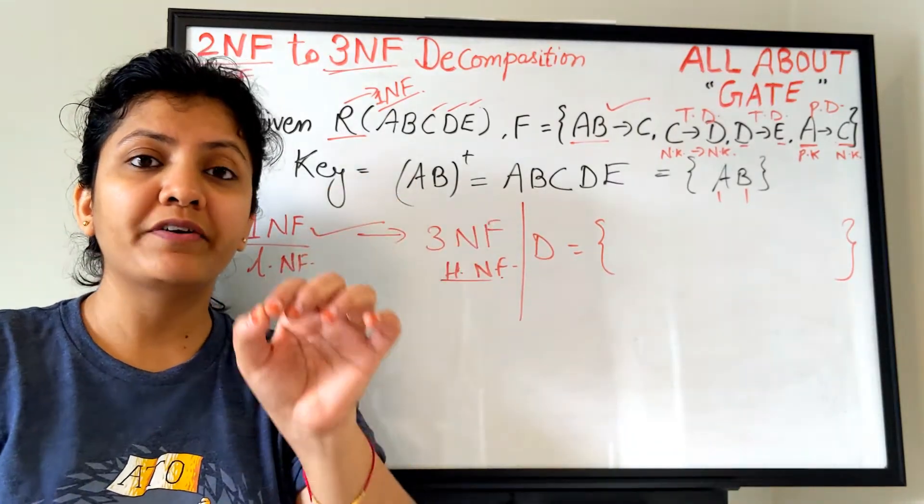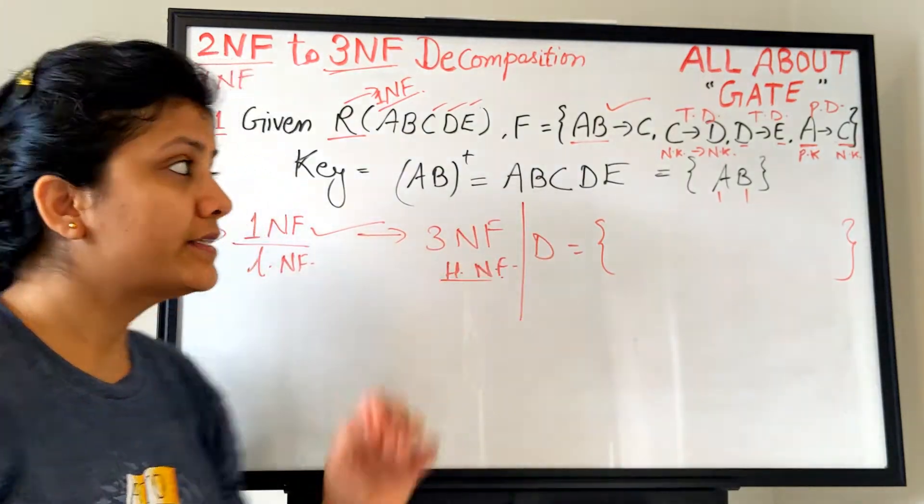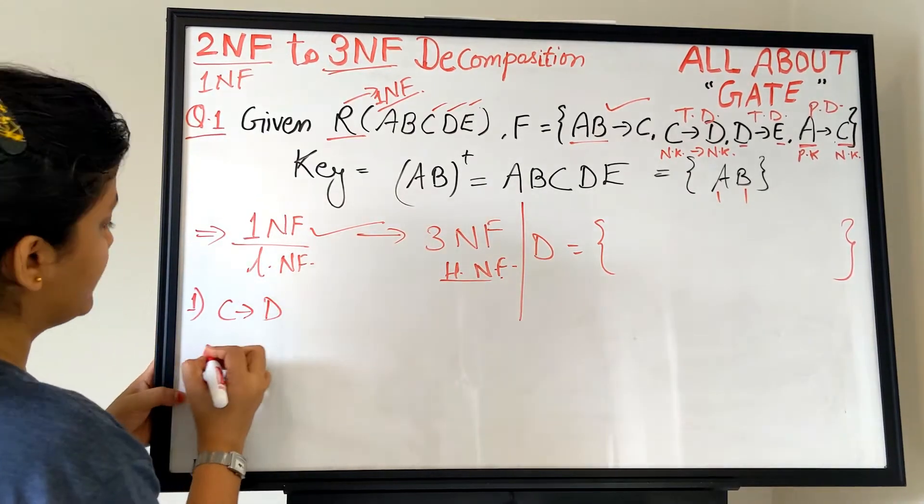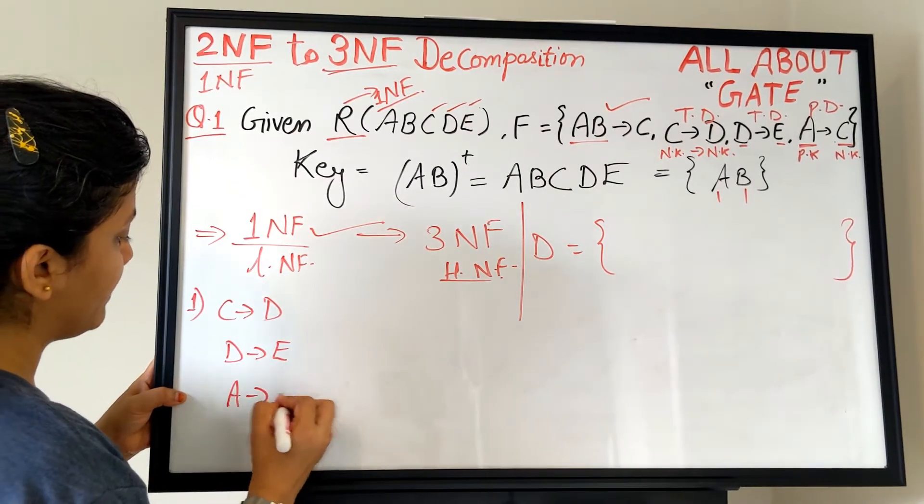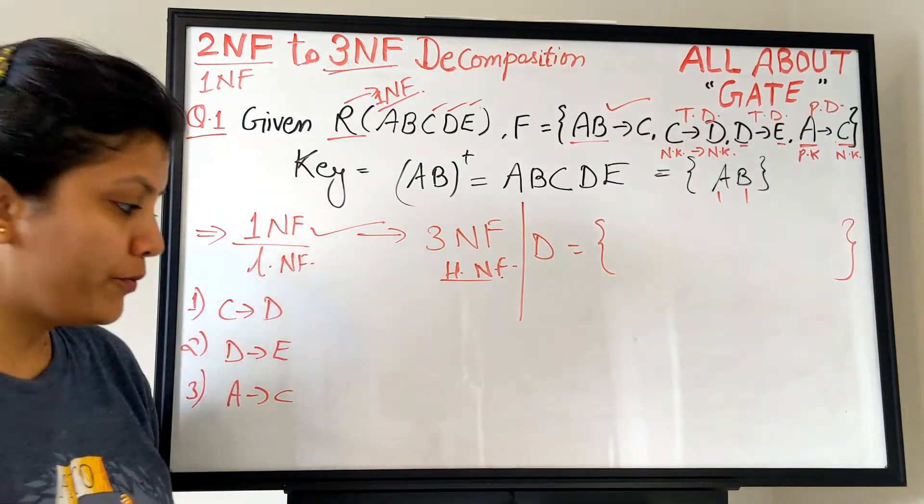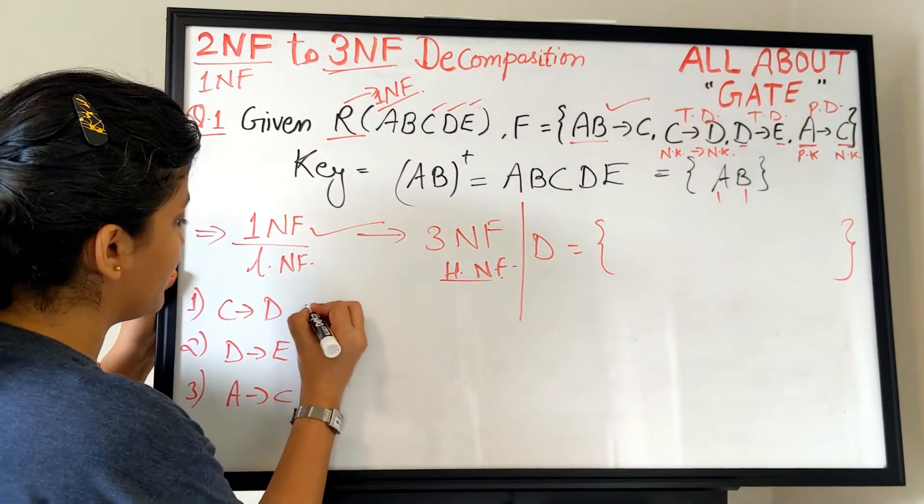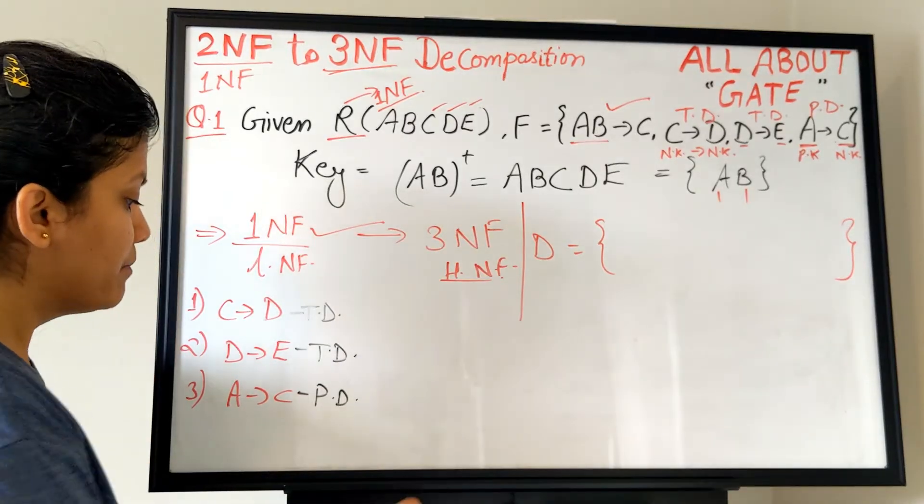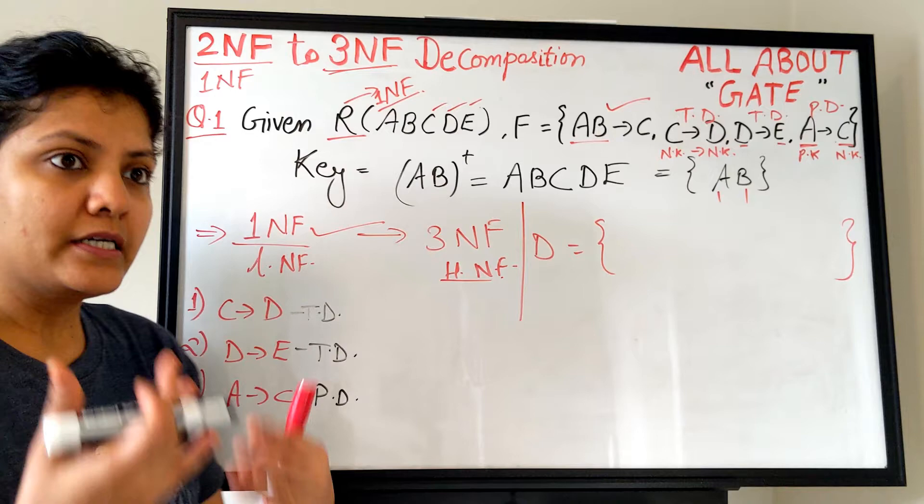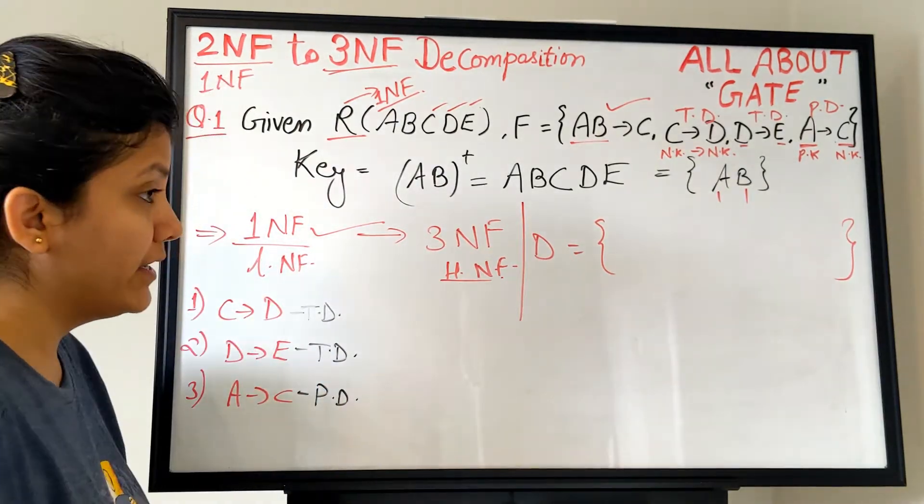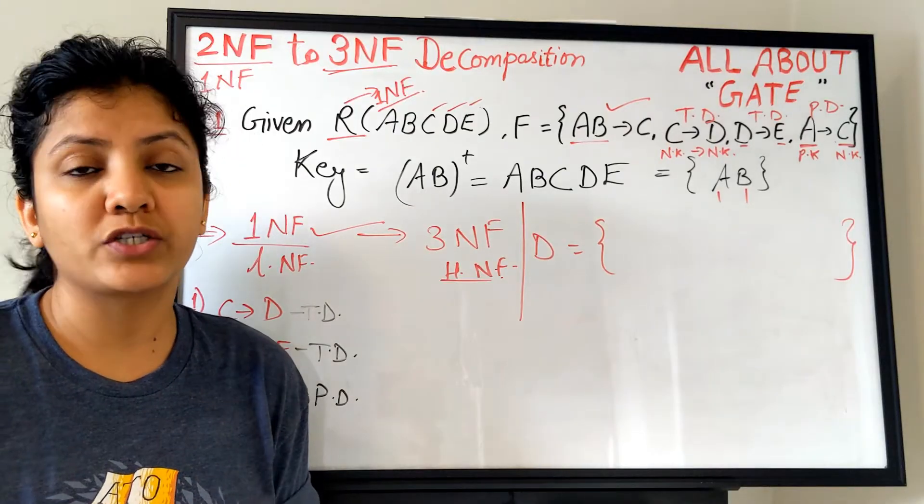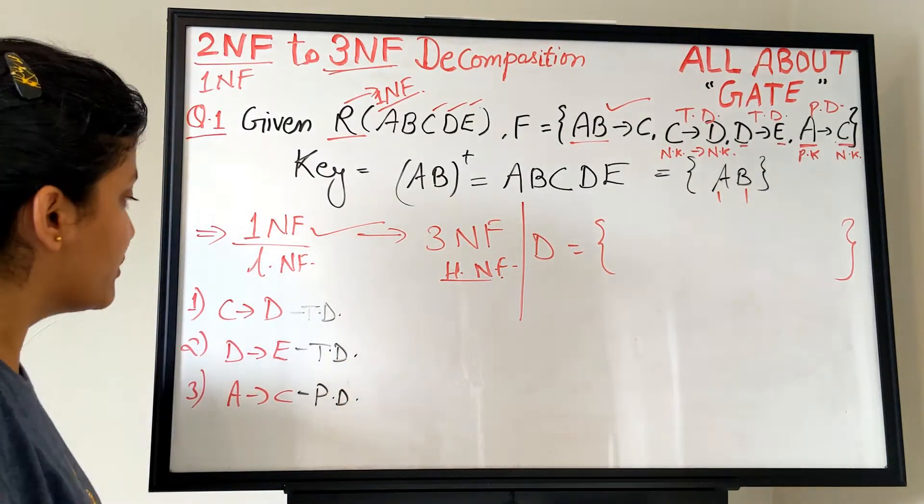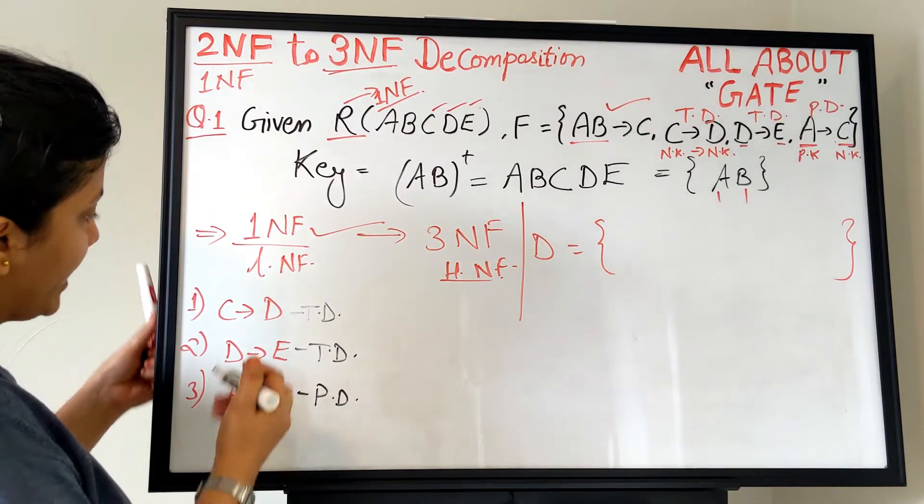For that, very simple statement - whatever functional dependency is causing a trouble for this relation to be in the third normal form, for that functional dependency make a separate relation, give it to a separate table or sub-schema. If I consider here, I see three of the functional dependencies: C to D, D to E, and A to C. My dear friends, students, and viewers, I hope you understand - no matter this is transitive dependency, this is also transitive dependency, and this one is partial dependency. You might say partial dependency shouldn't be a problem, it's a problem for 2NF, true. But we all also understand that 2NF is a primary requirement for a third normal form. If a relation is not in second normal form, it cannot be in third normal form. So even this is a problem for the third normal form.